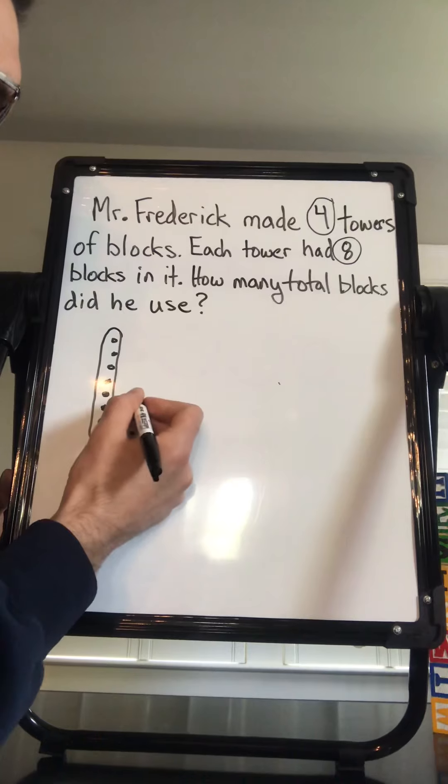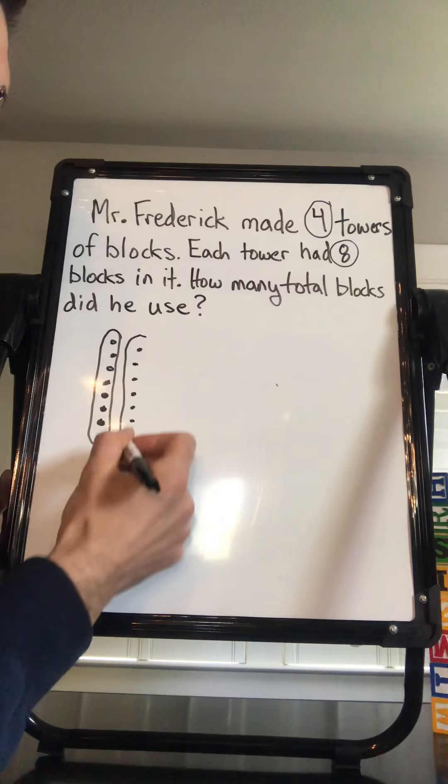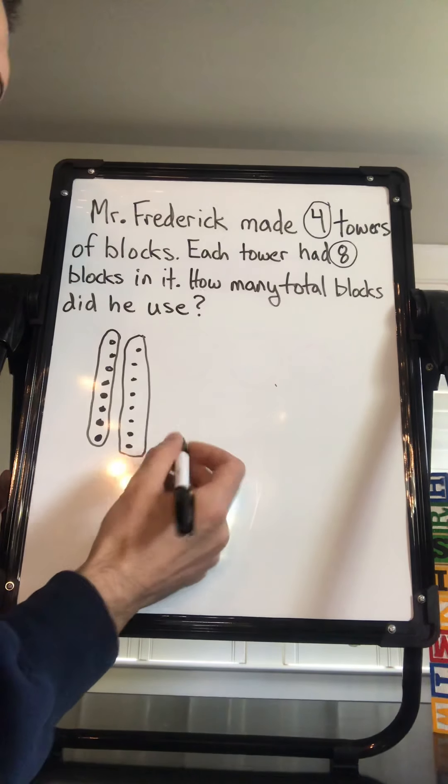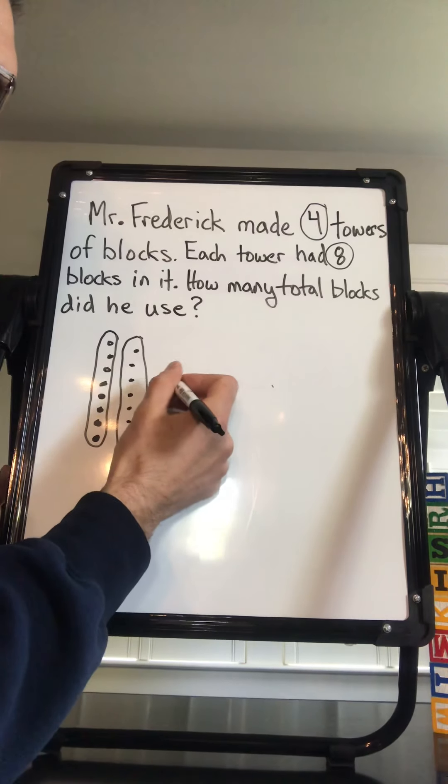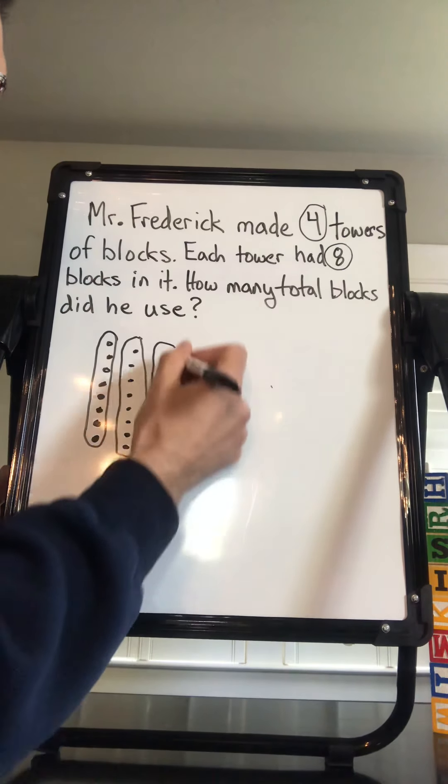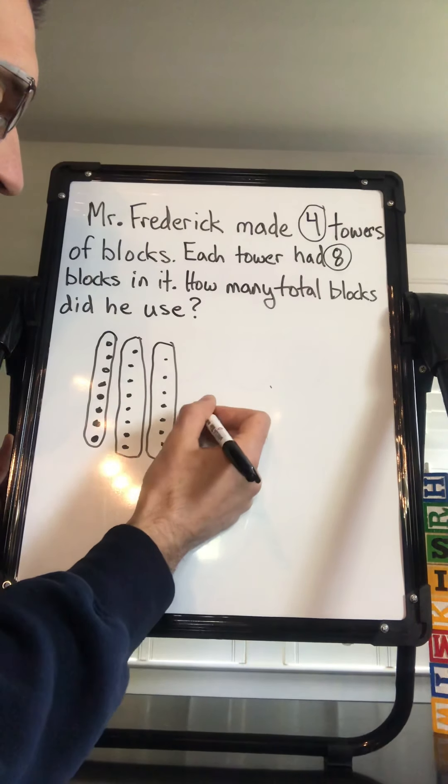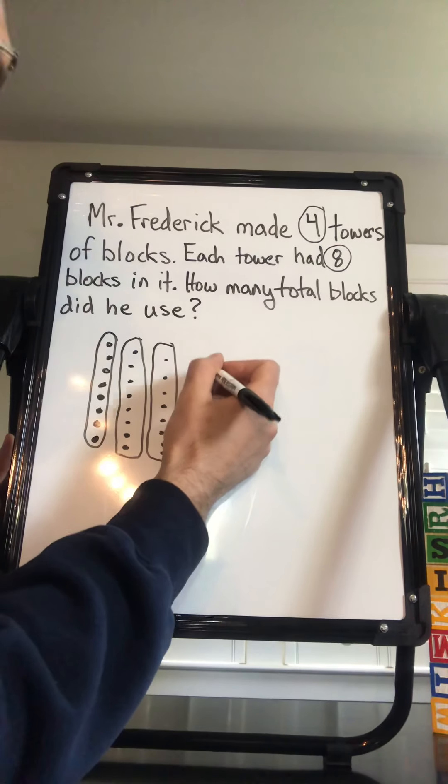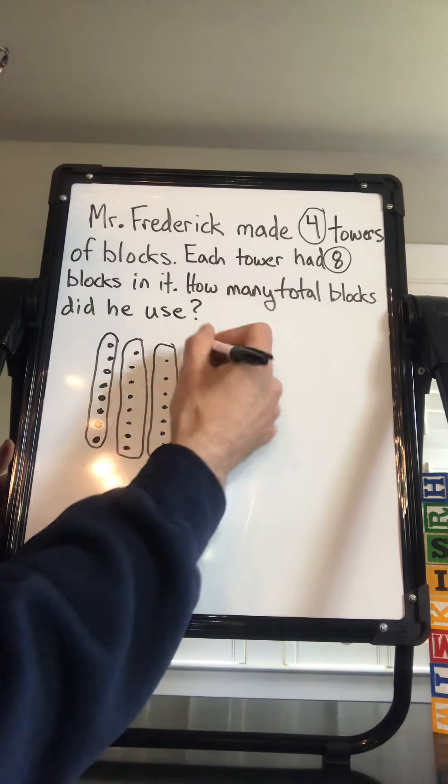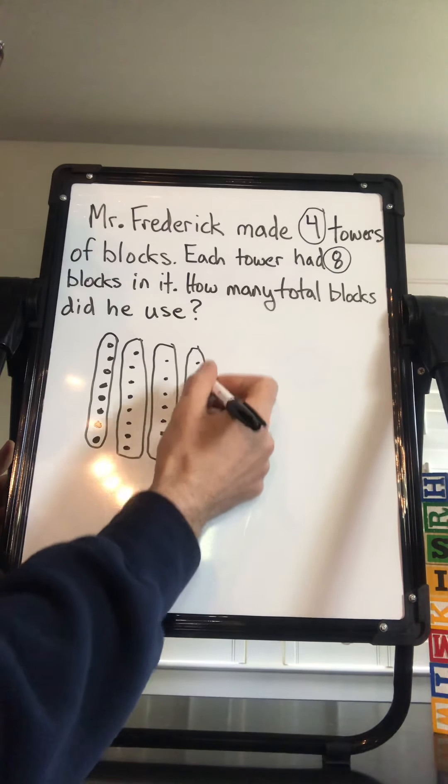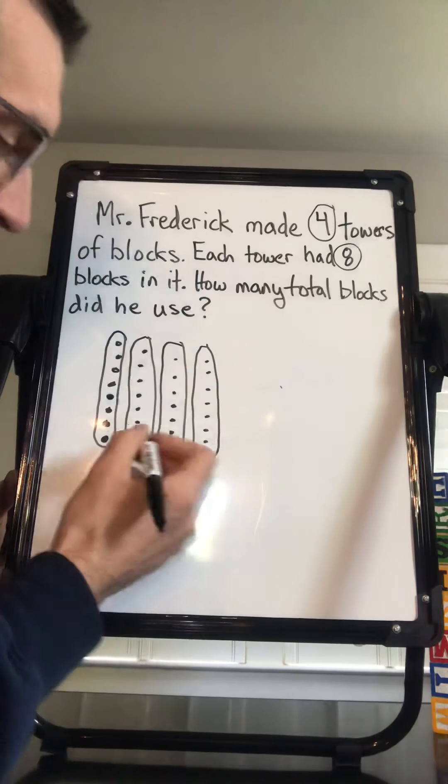Now it says I have four of those, so I'm going to go ahead and draw out all four, and you can go ahead and do this on your paper as well. Make sure you have eight in each tower. There's two, four, five, six, seven, eight. There's three towers: one, two, three, four, five, six, seven, eight. There's four towers: one, two, three, four, five, six, seven, eight. Make sure I counted carefully on that one.